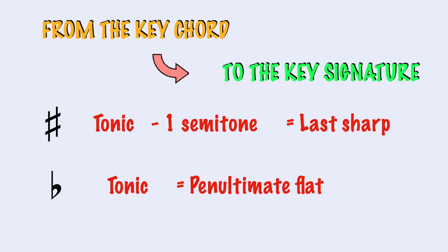To know the key signature from the key chord, we take the main note of the chord as our tonic. If we have sharps, we go down by a semitone and find the last sharp of our key signature, then write the sharps in order until we get to our note. If there are flats, our tonic is the flat before the last one, so we write the flats in order until we reach our tonic and then add another flat. I hope this video helped you understand how to identify any key chord and key signature with sharps and flats. From now on, when you see somebody struggling to remember the circle of fifths, tell them they're wasting their time and send them to me. Thank you for sharing and liking this video. Subscribe to my channel to become a Theory Virtuoso. Ciao!